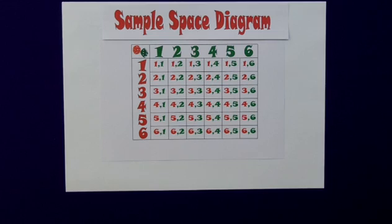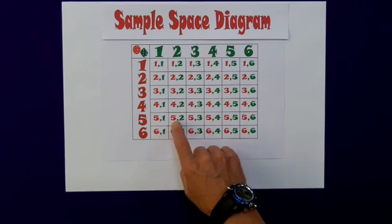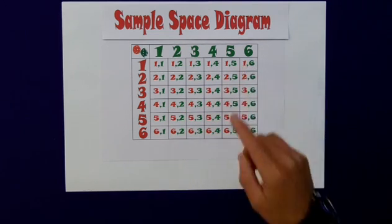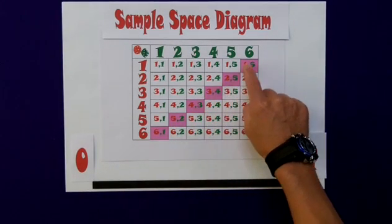So how can we use this diagram? Well, let's consider an example. We would like to know what is the probability of scoring seven with two dice. Well, in fact, seven is scored here with a six and a one, five and a two, four and a three, three and a four, two and a five, and a one and a six. So my total of seven is shown with the highlighted squares, and in fact, there are six of them.